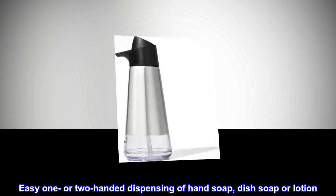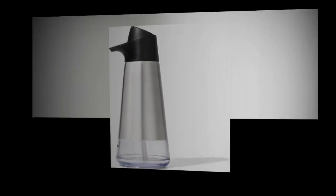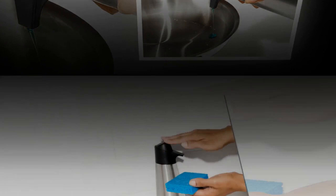Easy one- or two-handed dispensing of hand soap, dish soap or lotion. Spout is ideal for dispensing onto sponge or directly into sink. 15-ounce capacity with wide opening for easy filling.